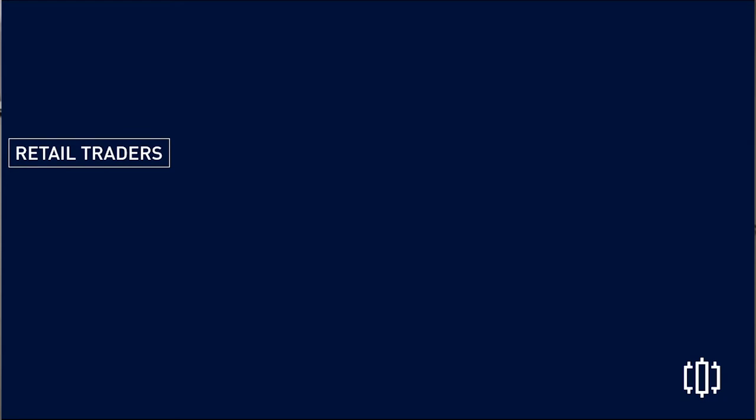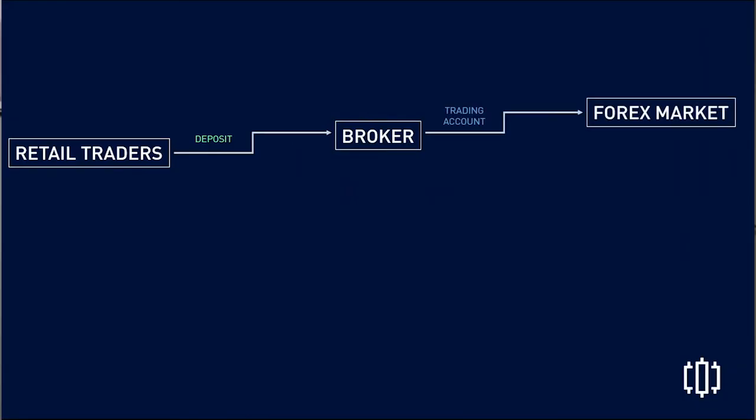Some people are confused about what FIBO really is — thinking we're taking your money to trade forex. Let me show you the actual flow of how everything works. We — the retail traders — deposit money to a broker, because we cannot trade in the forex market without being licensed. That's why we need a broker to trade. The broker we use is FX Primus, and they will give you a trading account under your name that you fund yourself.